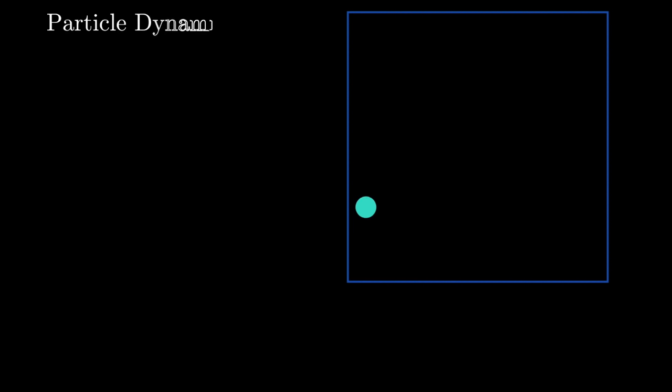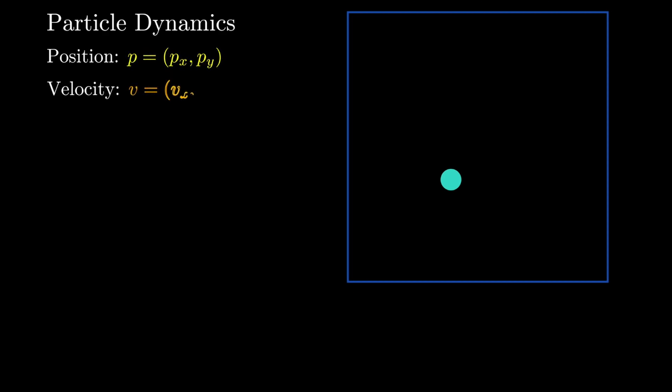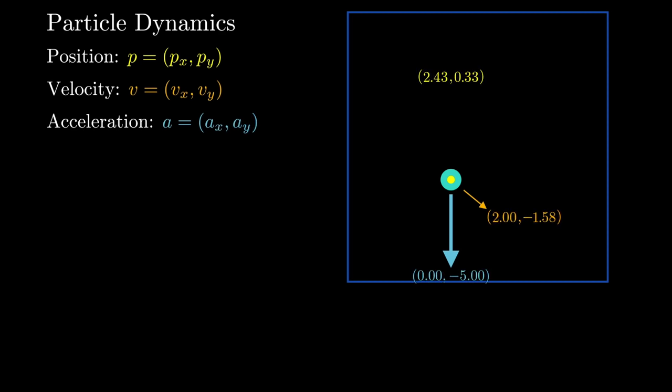Let's start simple. Here we have a single particle bouncing along the edges of a box. There are three different ideas at play here. The first involves particle dynamics. At every frame, a particle will have a position, velocity, and acceleration. To keep things simple, we can enforce the constraint that in all simulations the acceleration will be constant. In most of our simulations, in fact, we'll keep this acceleration at zero, but it's worth understanding how to incorporate the acceleration into the dynamics of our simulation.